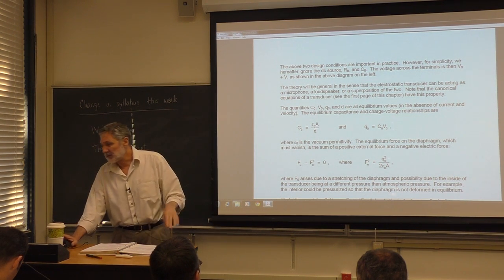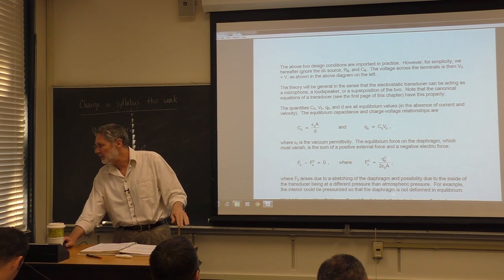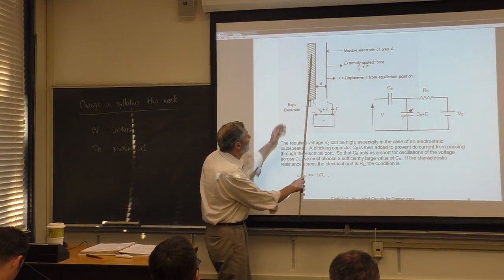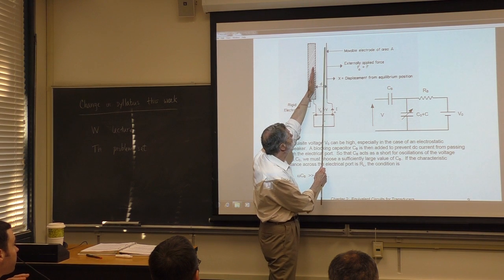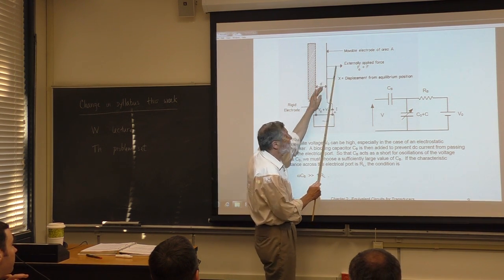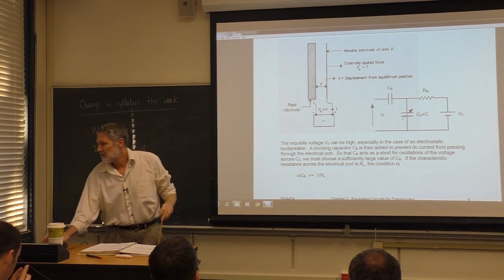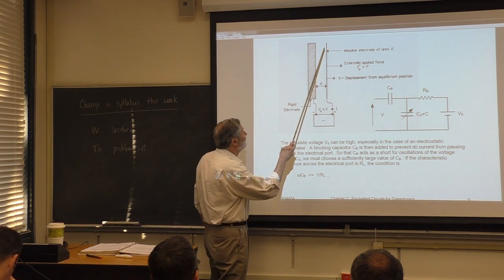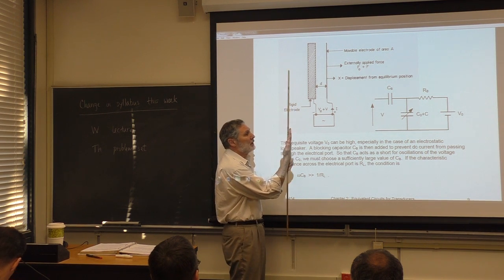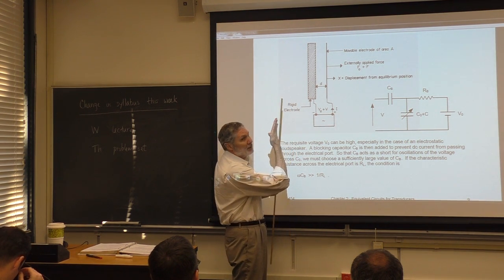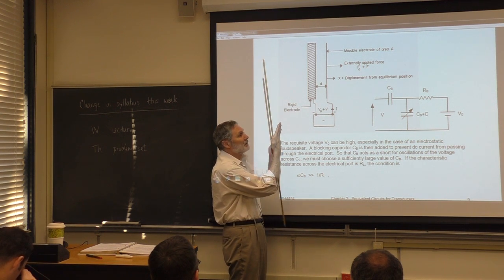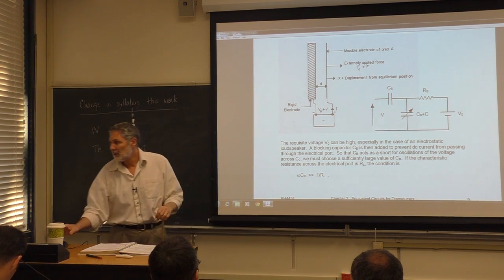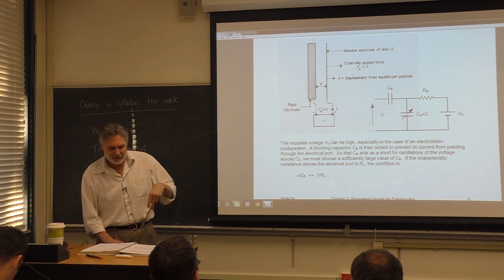In equilibrium, there's no net force on the movable plate. There's a balance between the attractive electrical force and a repulsive mechanical force. If this is a flexible membrane anchored at the edges, it bends in and reaches equilibrium where the mechanical tension balances the electrical force.